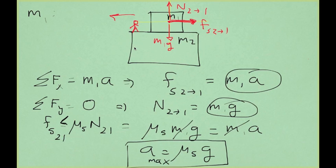This is a breakthrough: there is a fundamental limitation on M1's motion. The acceleration of M1 is limited by the friction between M1 and M2. It is impossible for M1 to accelerate with an acceleration greater than μs times G. So M1 will never have an acceleration surpassing μs·G.